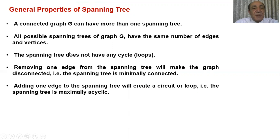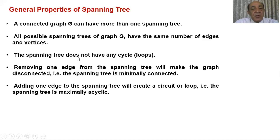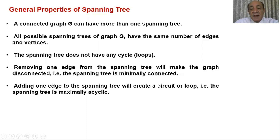General properties of a spanning tree: a connected graph G can have more than one spanning tree. All possible spanning trees of graph G have the same number of edges and vertices. The spanning tree should not include any cycle. Removing one edge from the spanning tree will make the graph disconnected — we say the spanning tree is minimally connected. Adding one edge will create a circuit, so the spanning tree is maximally acyclic.